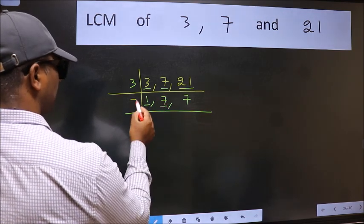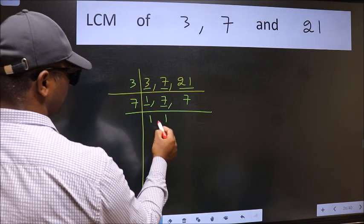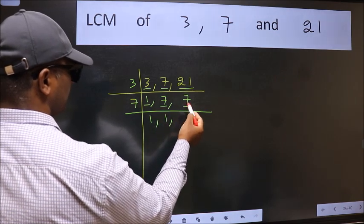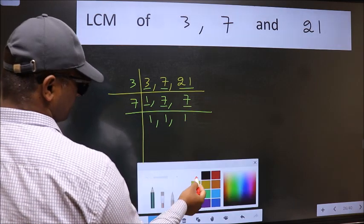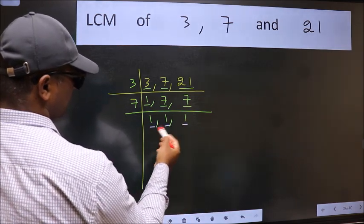7 is a prime number. So 7, 1, 7. The other number 7. When we got 1 in all the 3 places.